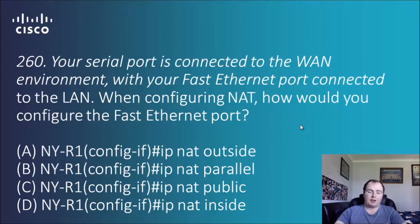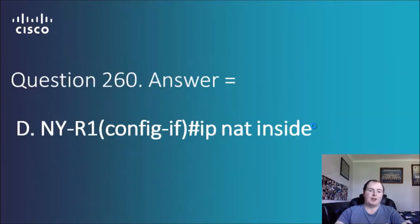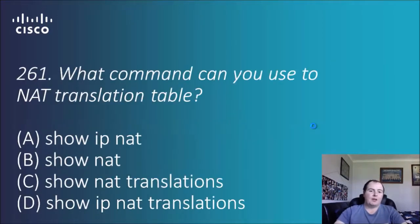Question 260: your serial port is connected to the WAN environment with your fast ethernet port connected to the LAN. When configuring NAT, how would you configure the fast ethernet port? Options are 'IP NAT outside', 'IP NAT parallel', 'IP NAT public', or 'IP NAT inside'. We can rule out B and C. The fast ethernet port is connected to the internal LAN, so the answer is 'IP NAT inside'.